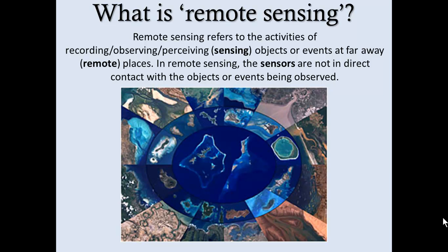When we talk about remote sensing, we're referring to the activities of recording, observing, and perceiving or sensing objects or events at far away remote places. In remote sensing, the sensors are not in direct contact with the objects or events being observed.